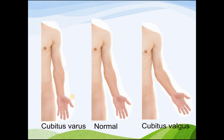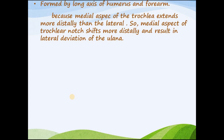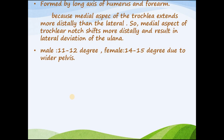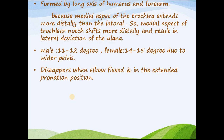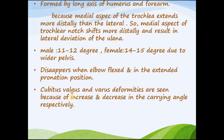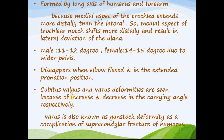To quickly revise: the carrying angle is formed by the long axis of the humerus and the forearm because the medial aspect of the trochlea extends more distally than the lateral aspect, shifting the trochlear notch distally and causing lateral deviation of the ulna. Males have 11–12 degrees and females 14–15 degrees due to wider pelvis. It disappears in flexion and extended pronation. Cubitus valgus and varus result from increase and decrease respectively, with cubitus varus also known as gunstock deformity from supracondylar fracture.